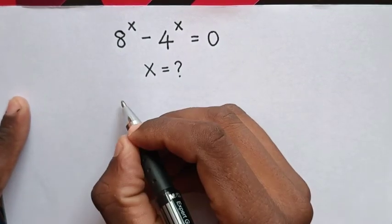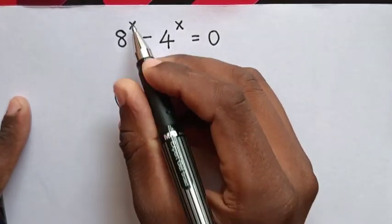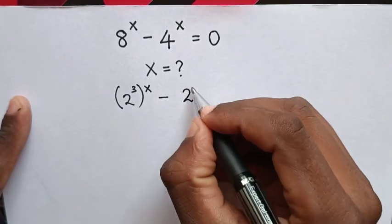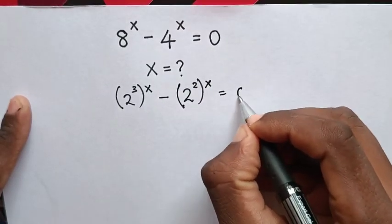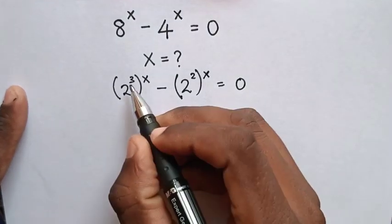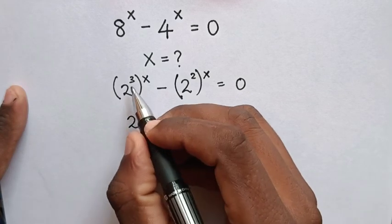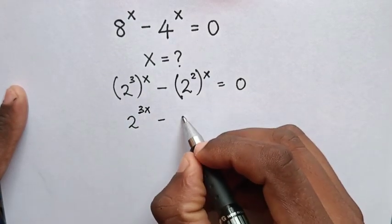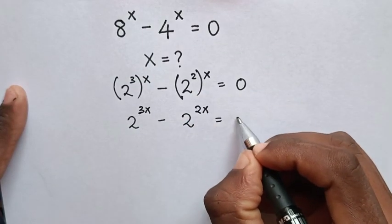From here, 8 is the same as (2^3)^x, and 4 is the same as (2^2)^x equals 0. Then we multiply the powers, so it will be 2^3x - 2^2x = 0.